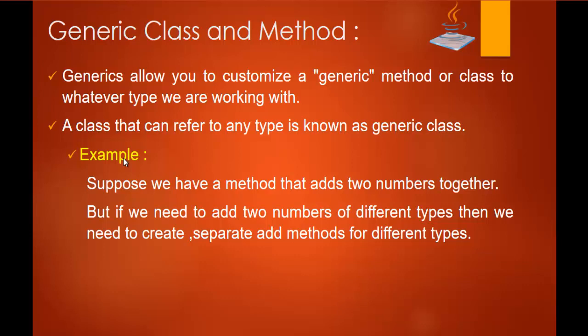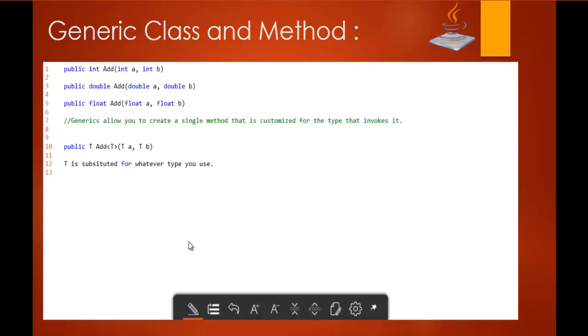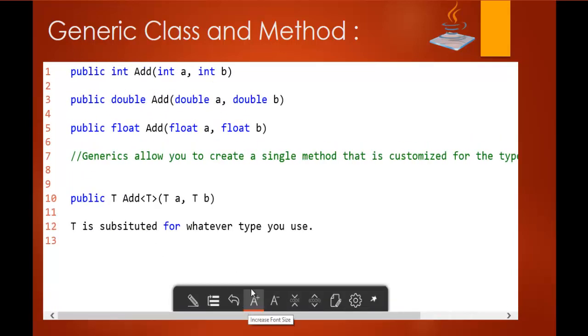Imagine you have a method that adds two numbers, but if you need to add two numbers of different types, then we need to create separate add methods for the different types. As this slide explains, if I need to add two integers, I write a method with return type integer. If I need to add two doubles, I need a method with return type double. If I need to add two floats, I need a method returning floating point numbers.